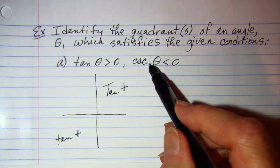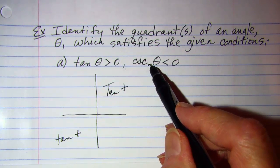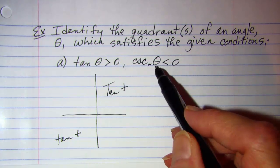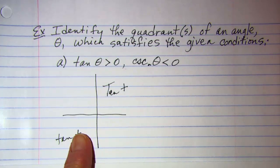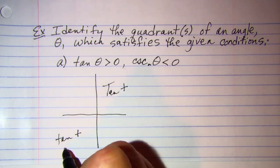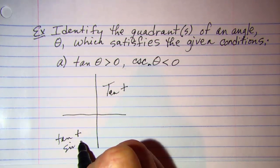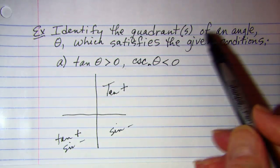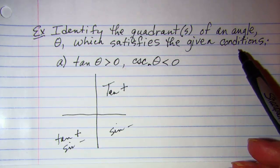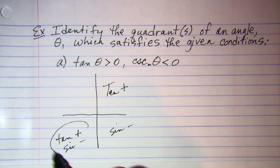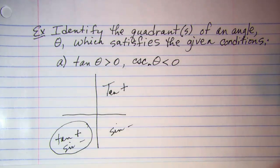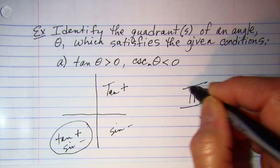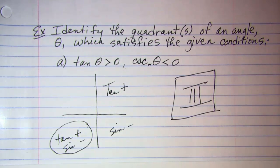For cosecant, cosecant is the reciprocal of sine. I want the sine to be negative in these two quadrants. So sine is negative here and sine is negative here. In order to satisfy the given conditions, we want this quadrant, so I would state quadrant three. Remember that quadrants need to be written in Roman numerals.